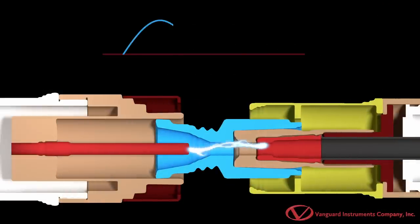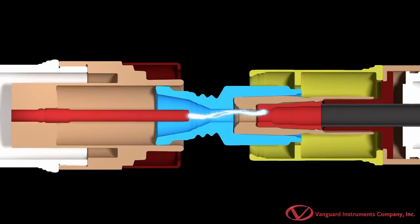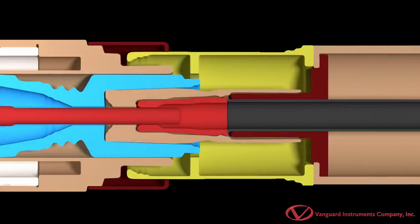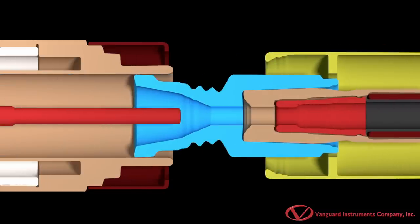An AC arc extinguishes at every zero current level but reignites immediately after crossing the zero point due to the presence of voltage across the open contact. In order to avoid arc re-ignition, the contacts must be separated with sufficient speed and the dielectric strength across the open contacts must be able to withstand the transit voltage.